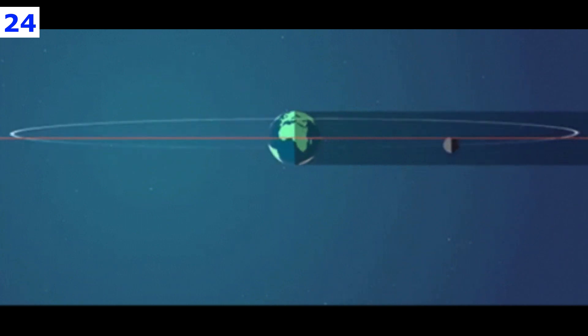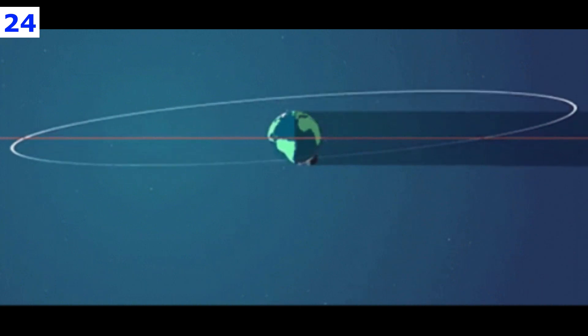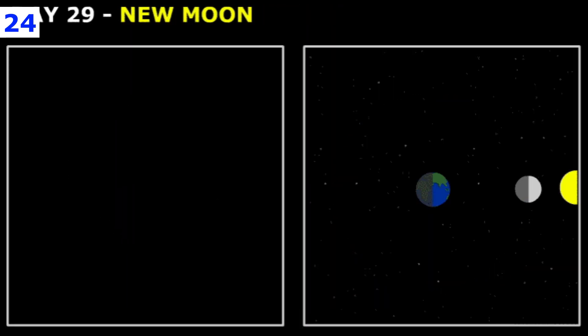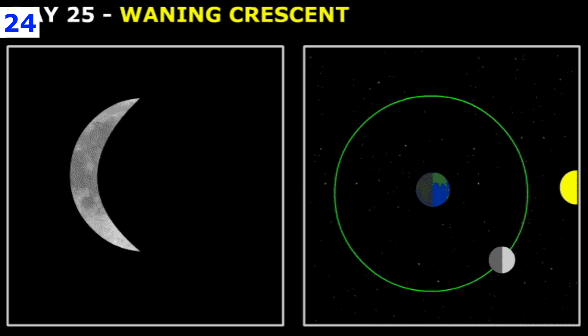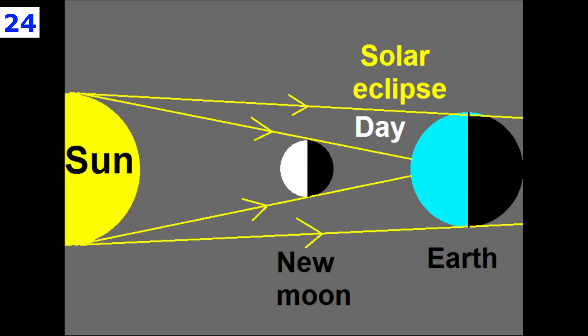Though you cannot see it, a new moon rises and sets at about the same time as the sun, which makes sense when you consider the one time you can observe a new moon — during a solar eclipse, it is a new moon that passes between us and the sun.